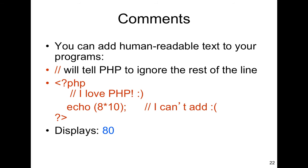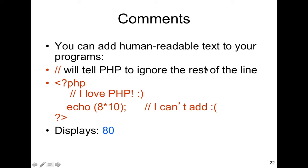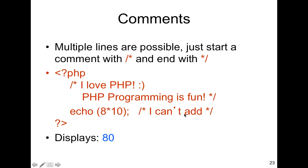PHP supports comments using two forward slashes, which tells it to ignore the rest of the line. It also supports C-style block comments with a forward slash and asterisk to start and an asterisk and forward slash to end — this allows comments over multiple lines. The double-slash is for a single line; the /* */ style starts and ends a block comment with everything in between being part of the comment.